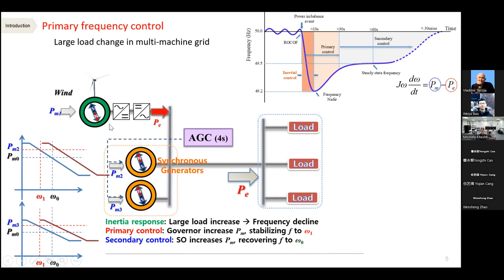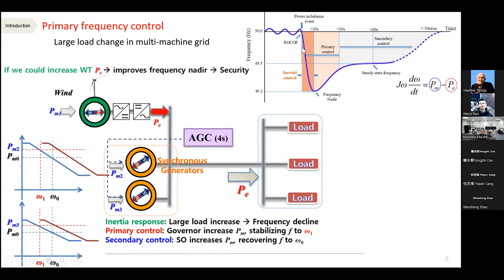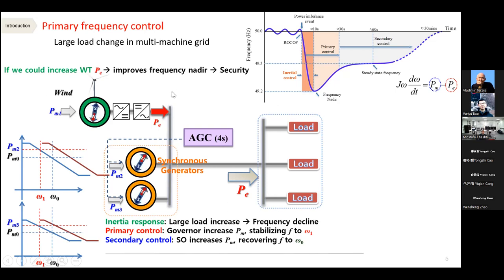Wind turbine generators normally do not participate in such mechanisms because they are working on maximum power point tracking and are isolated from the system through power electronics. Power electronics act as a barrier that prevents the wind turbines from being synchronized to the grid. Our objective is that when a frequency event occurs, we could somehow increase the wind turbine's electrical power output — not mechanical input, because this is wind and we have no control over it. By increasing the electrical power output of wind turbines during a frequency event, we can greatly improve the frequency nadir. Note that AGC is not activated in the UK power system — they use the old-fashioned way of calling power plants to increase their output.